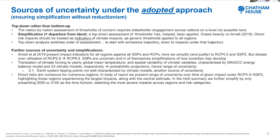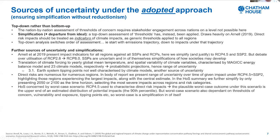Direct risks are numerous across regions, and in the body of the report we present a range of uncertainty over time of given impact under RCP 4.5 and SSP 2, highlighting those regions experiencing the largest impacts within the central estimate. In the heads of state summary we further simplified by only presenting 2050 or 2100 as the time horizon, selecting the most severe impacts across regions and risk categories. Heads of state are concerned by the worst-case scenario, and RCP 4.5 leads to a plausible worst-case outcome under this scenario, with the upper end — the 90th percentile — of the estimated distribution of potential impacts. But the worst case is also dependent on thresholds of concern, vulnerability, exposure, tipping points, and so on — so the worst case is a simplification in itself.